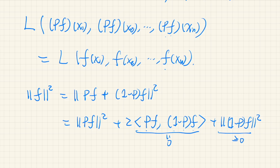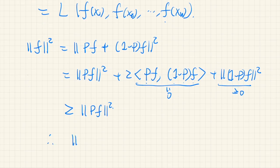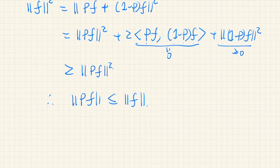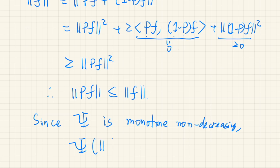So, this is 0, and this is non-negative. Therefore, we have this inequality. The norm of f is greater than or equal to the norm of Pf. Therefore, since the function psi is monotone, by assumption is monotone non-decreasing, we have psi(||Pf||) ≤ psi(||f||).